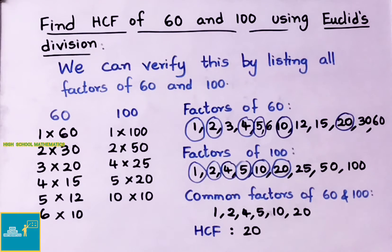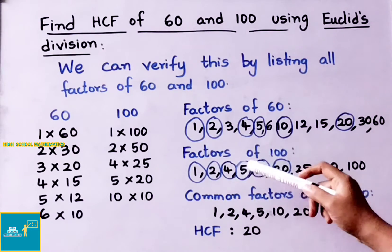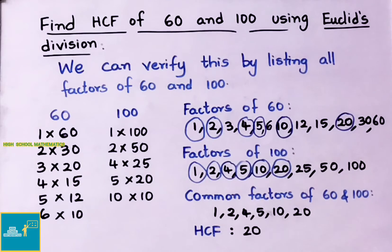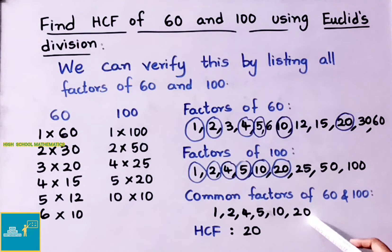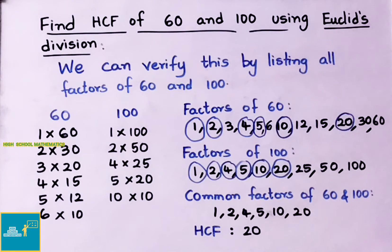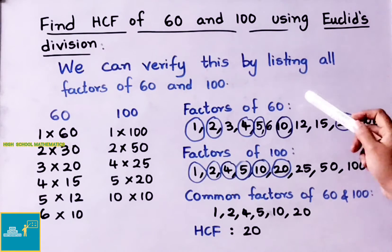Now we take the common factors of 60 and 100. Common factors in both: 1, 2, 4, 5, 10, and 20. HCF means highest common factor. Among all these common factors we choose the highest, which is 20. Therefore HCF is 20. By both methods we got HCF as 20. We can verify Euclid's division HCF result using the listing factors method.